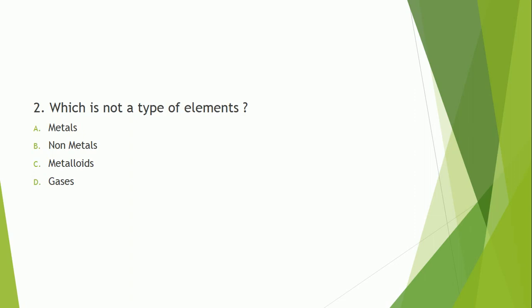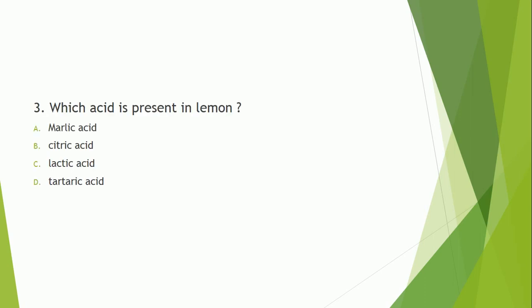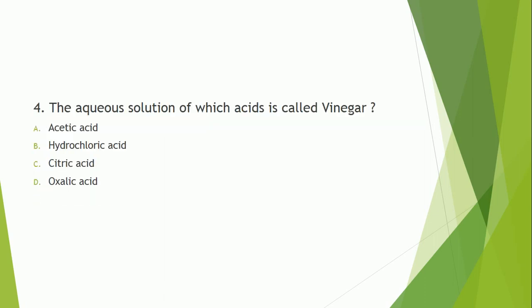Question number 2: Which is not a type of element? The answer is option D — gases is not a type of element. Question number 3: Which acid is present in lemon? The correct answer is option B — citric acid.